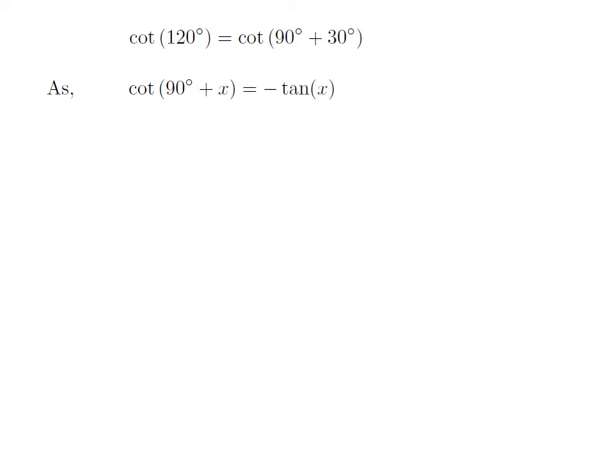As we know, the trigonometry identity cotangent of 90 degree plus x is equal to minus tangent of x.